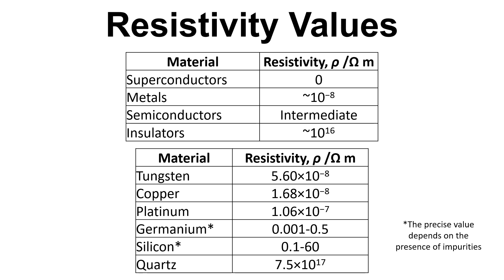We can also see that resistivity depends on the material we are examining. There are a number of values given in the table: tungsten, copper, and platinum are all metals with very low resistivities. Further down the table we have semiconductors, germanium and silicon. The precise value of resistivity for these materials depends on their impurities, and that applies to all materials — impurities will affect the resistivity. Finally, quartz SiO2 in a crystalline structure has a very high resistivity of 7.5 times 10 to the 17 ohm meters, and that's also what glass is made from as an amorphous form of quartz.